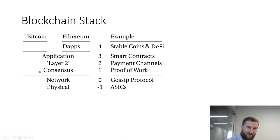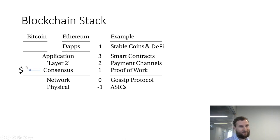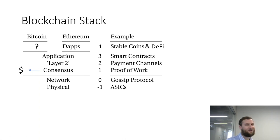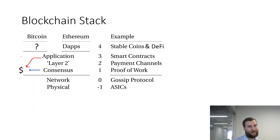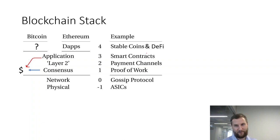Bitcoin's best feature is at the consensus layer — straight from consensus, the application of bitcoin is money. In terms of dApps, there is some work being done on what you can do in the bitcoin protocol, but it's still very limited. Skipping over layer two, money is still the killer app on bitcoin.